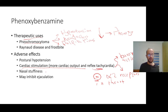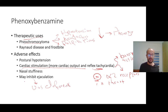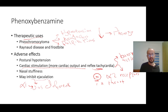Other adverse effects of phenoxybenzamine include nasal stuffiness due to vasodilation in the nasal vessels, and inhibition of ejaculation — because alpha-1 receptors are present in the vas deferens, and blocking them causes smooth muscle relaxation, potentially inhibiting ejaculation.